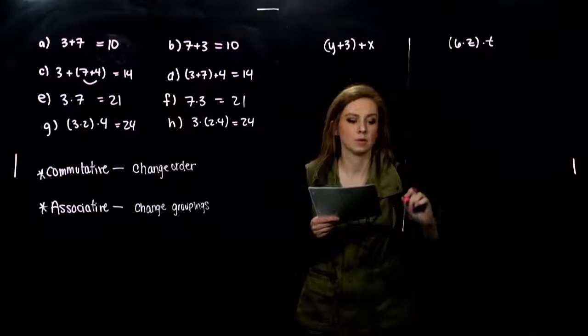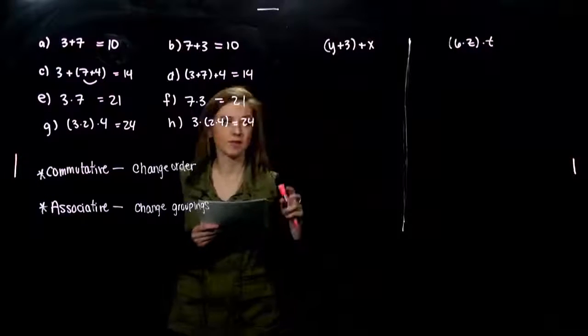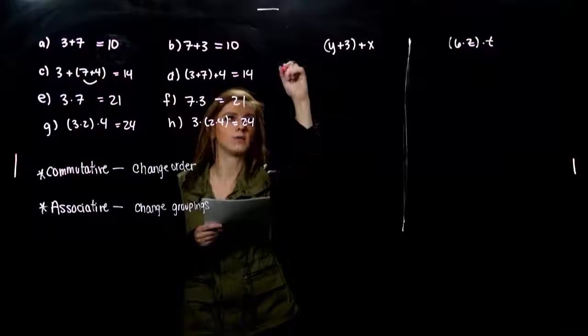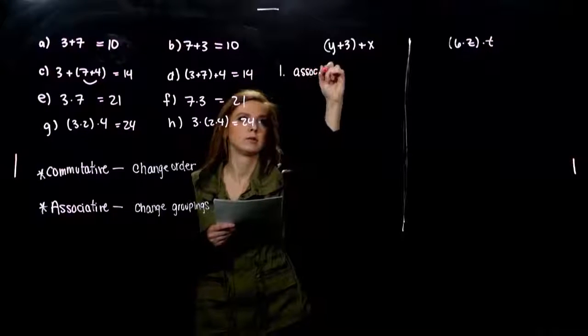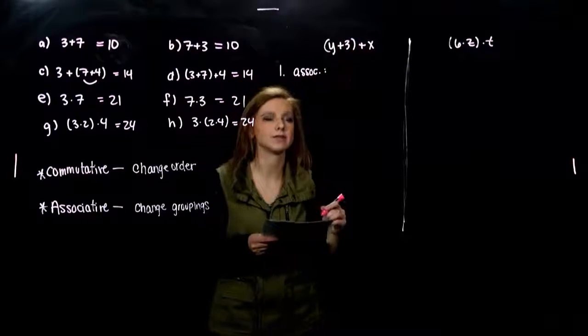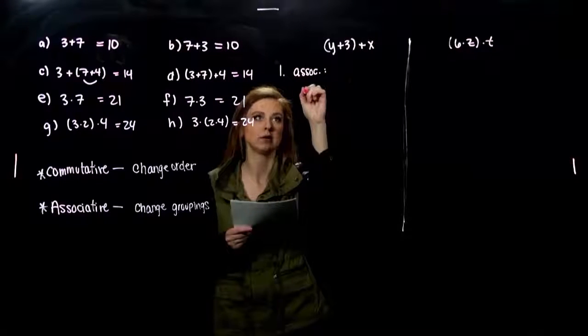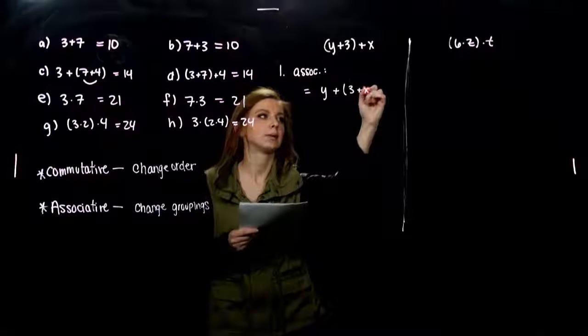So, what are different laws that we can use, and what is it going to look like? So if I use the associative law over here to write an equivalent expression, what are we looking at? So I could associate three and x together instead of y and three in the beginning. So it could be equivalent to y plus quantity, three plus x.